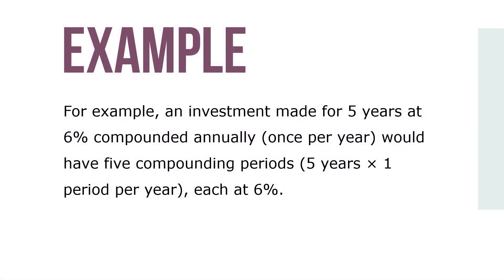For example, if an investment made for 5 years at 6% compounded annually, once per year, would have 5 compounding periods — 5 years times 1 period per year — each at 6%. If the same investment was compounded semi-annually, 2 times per year, there would be 10 compounding periods — 5 years times 2 periods each year — each at 3%, which is the 6% annual rate divided by 2 periods each year.